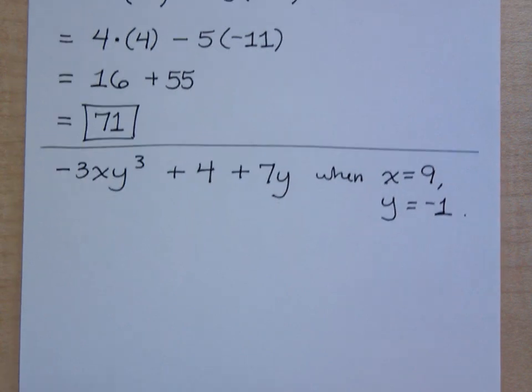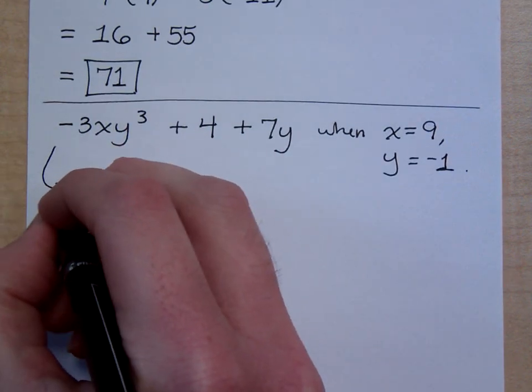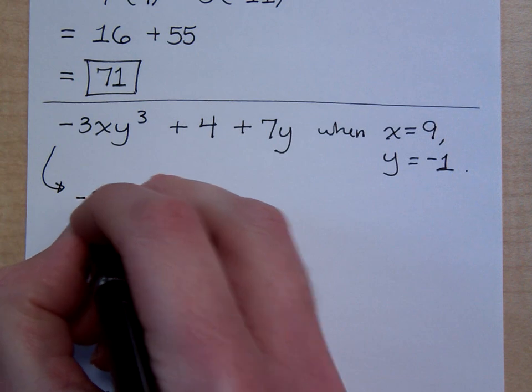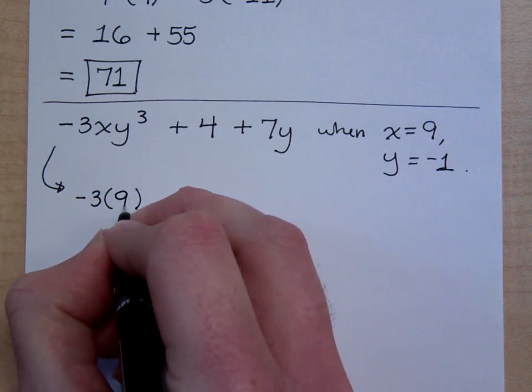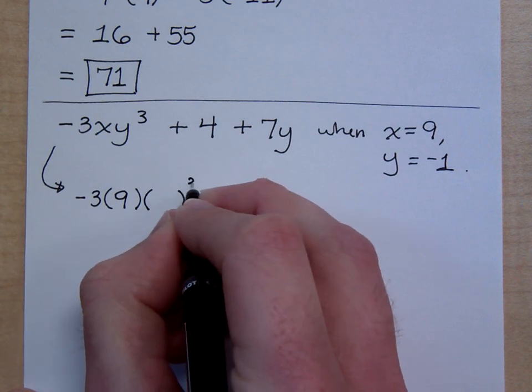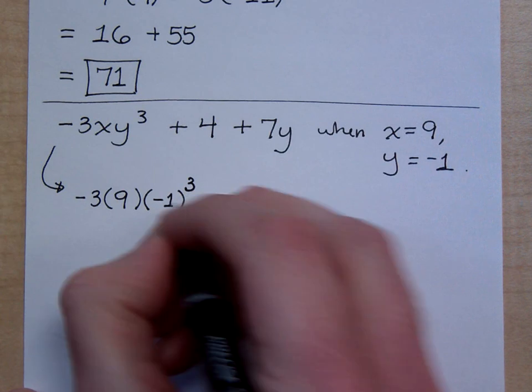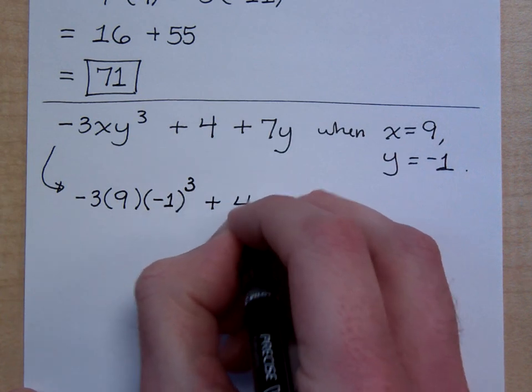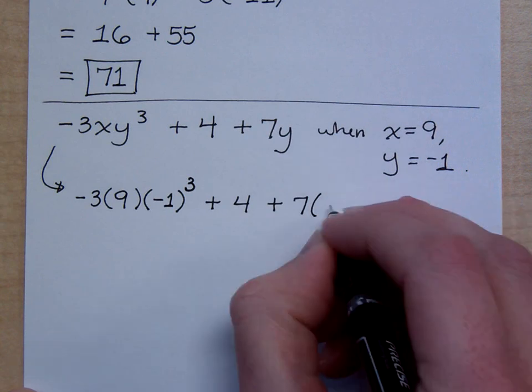We just need to make the substitutions, right? So look what I have for when I do this. I still have a negative 3 but instead of the x I write what? 9. And I've got y to the third. Notice how I do this. I keep the parentheses for the y and I keep that exponent there. So what goes inside the parentheses instead of the y? Negative 1. I've just got plus 4 so that's nice and easy. Plus 7 times y is? Negative 1.